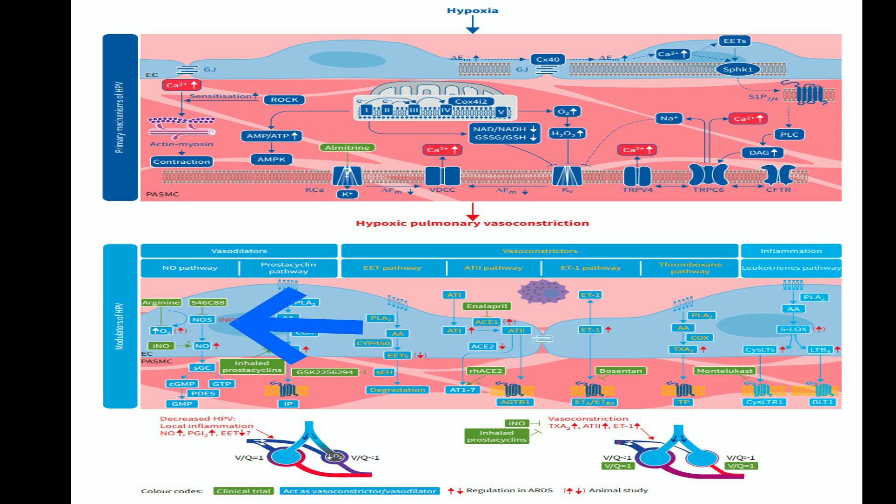HPV is modulated by the endothelium through factors involving nitric oxide–soluble guanylyl cyclase–cyclic guanosine monophosphate signaling, and arachidonic acid-derived vasoactive factors like PGI2, TXA2, and EETs, as well as ATII and ET1. These factors prompt either vasodilation or vasoconstriction.